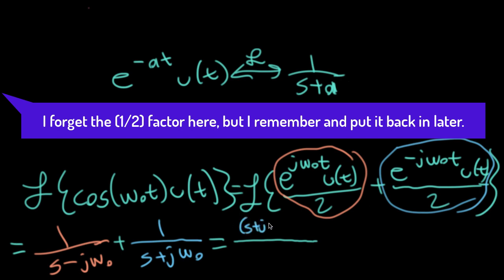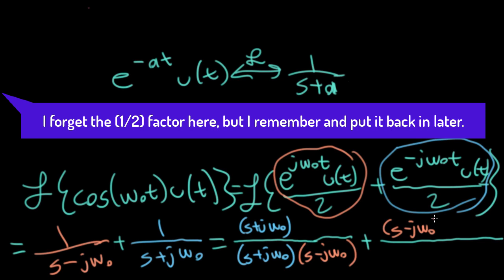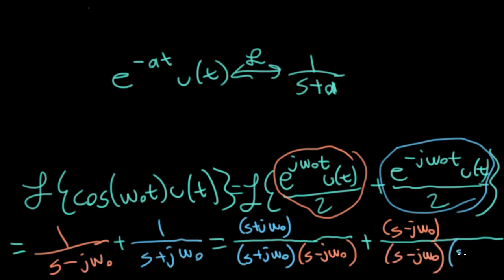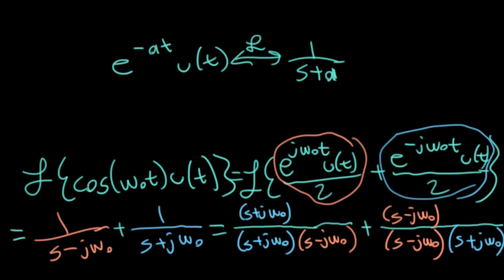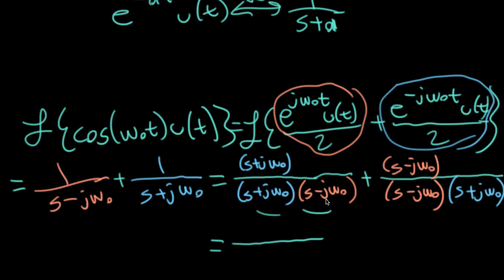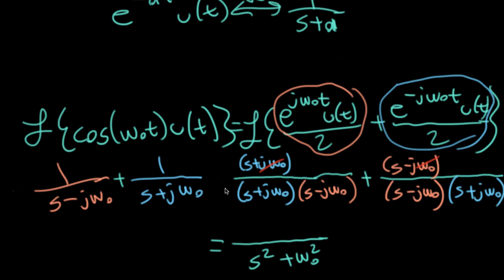So the first term will have a Laplace transform that looks like 1 over s minus j omega-0, because I would plug minus j omega-0 in for a to get the plus you see there. And then the second term transforms into 1 over s plus j omega-0. Let's simplify by writing everything over a common denominator. I'll multiply the numerator and denominator of the first term by s plus j omega-0, and multiply the numerator and denominator of the second term by s minus j omega-0. When I simplify, I can combine the factors in the denominator and write s squared plus omega-0 squared, because the two j's combine to give a minus which cancels with this minus. In the numerator, the j omega-0 terms cancel out, leaving 2s in the numerator. Remembering the factor of one-half, those twos cancel and I'm left with s.